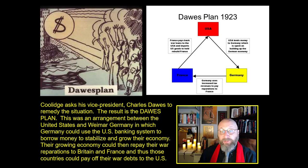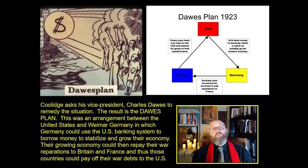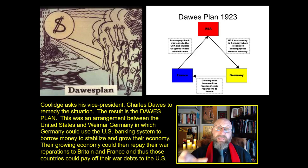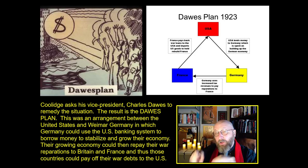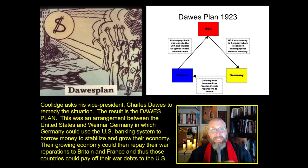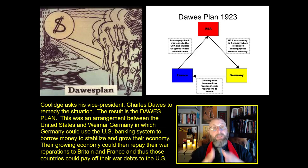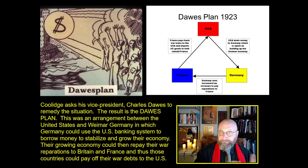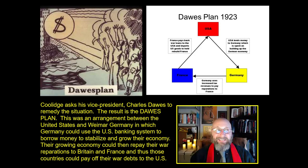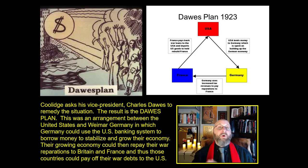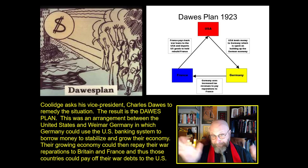Calvin Coolidge asked his vice president, Charles Dawes, to remedy the situation. The result was the Dawes Plan of 1923 — an arrangement between the United States and Weimar Germany in which the Germans could borrow money from American banks to invest in their own country and spark economic growth. Their growing economy would then pay off war reparations to France and Britain, which would enable France and Britain to pay their debt to the United States. The U.S. invests in Germany, Germany's economy grows, they pay reparations to France and Britain, and France and Britain pay off their debt to the U.S.